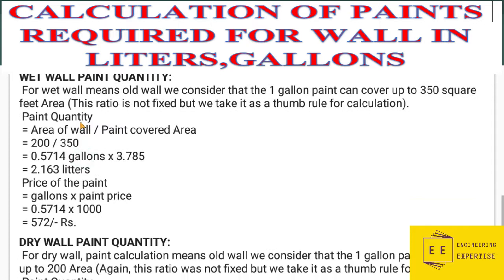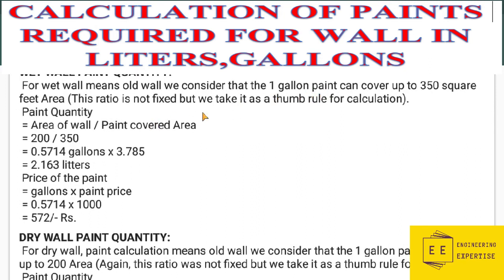For wet wall paint quantity — meaning old wall — we consider that one gallon of paint can cover up to 350 square feet. This is the thumb rule developed by engineers working on sites. This ratio is not fixed, but we take it as a thumb rule for the calculation. To calculate the paint quantity, we divide the wall area by the paint covered area per gallon: 200 divided by 350 square feet.